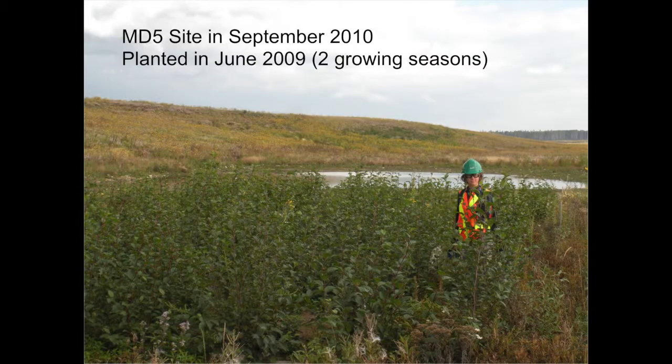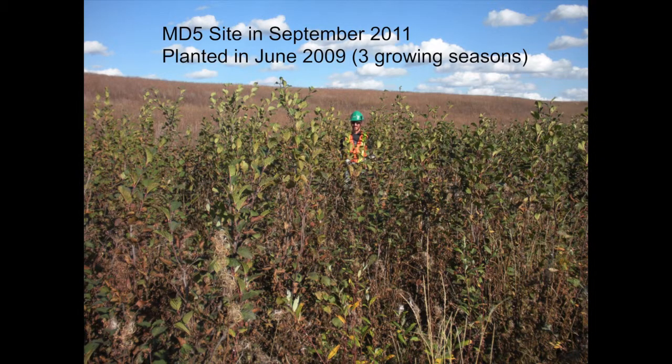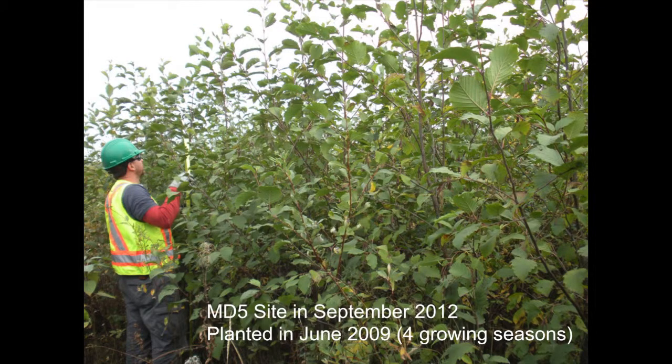After essentially two growing seasons, one of the technical staff there — she's about five and a half feet tall — but after three growing seasons the plants are already well over two meters in height. And this is what they looked like last September. In this particular area, the majority of the alders — these are the inoculated plants — are well over three meters in height.